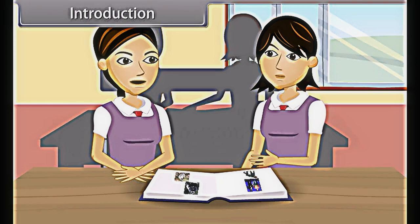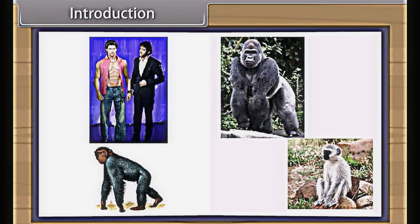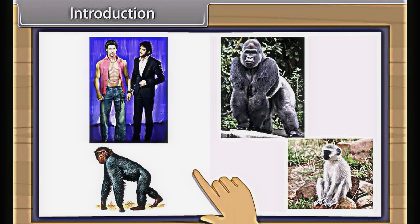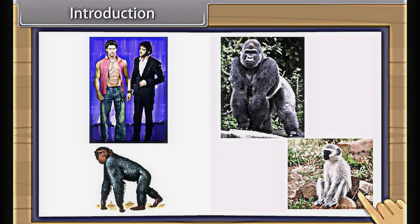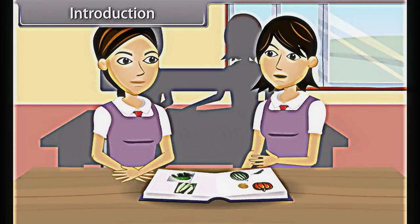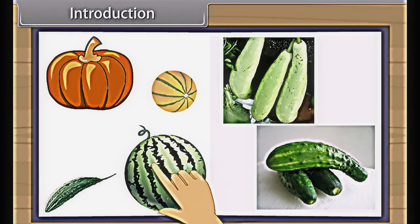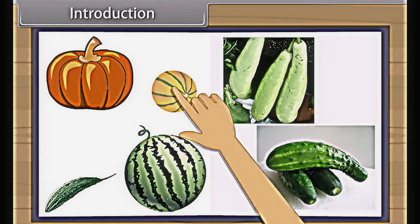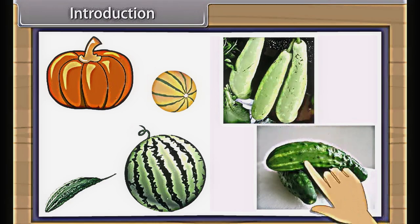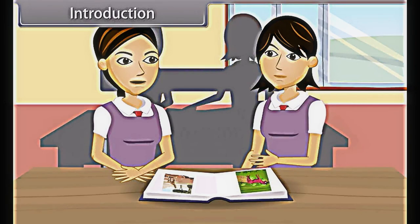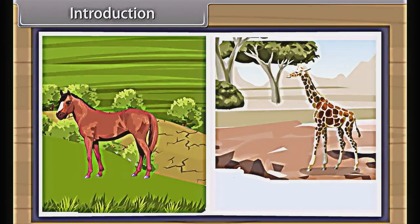These differences are within a species. But within a genus, there are some similarities — like human beings, chimpanzees, gorilla, and monkeys are all alike. Similarly, among plants, melon, watermelon, bitter gourd, pumpkin, bottle gourd, cucumber, etc., have many similarities. But when we study two genera, then we find out they are entirely different.